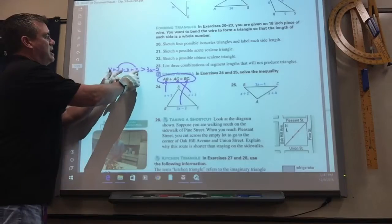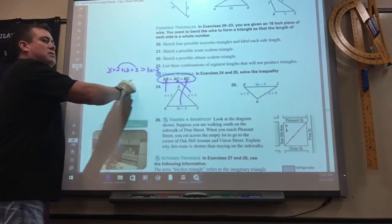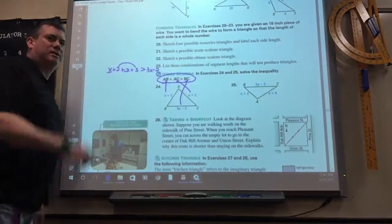So this would be 2x plus 5 is greater than 3x. So you get the x's together on one side, the non-x's on the other side.